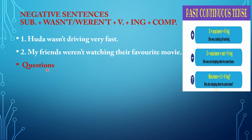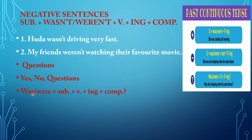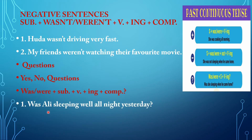We come to the questions, the first type: yes/no questions. You should begin a yes/no question by putting one of the auxiliaries — verb to be: was or were — plus subject, plus verb with -ing, and the complement. For example: Was Ali sleeping well all night yesterday? Was is verb to be; Ali is the subject; sleeping — sleep with -ing — and the complement.